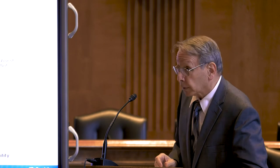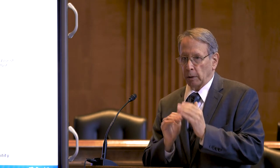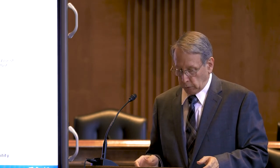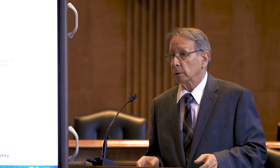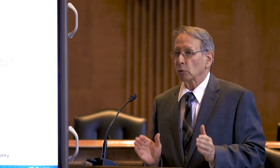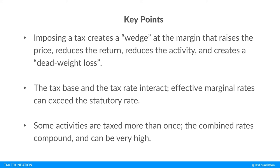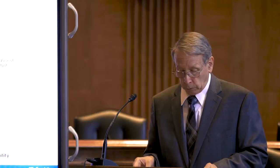There are three key points to get across today. First, imposing a tax creates a wedge between the sales price and what you keep at the margin — that raises the price, reduces the return to the seller, reduces activity, and creates dead weight loss. Second, the tax base and tax rates interact; rates may change behavior and the effective marginal rate can exceed the statutory rate. Third, some activities are taxed more than once, so rates compound and you get a much higher effective rate.